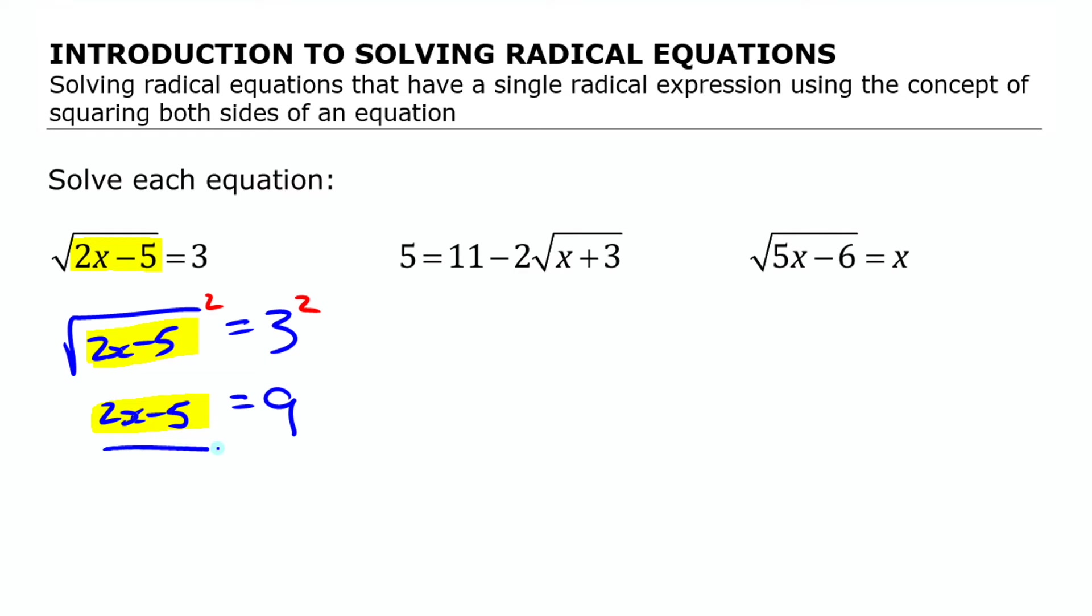Once I do that, 2x minus 5 equals 9. I can just solve it. It's a linear equation. I can add 5 to both sides or think of it as moving the 5 over. I'm going to get 2x is 14. And then if I divide both sides by 2, I get x is 7. So that's the solution to this radical equation.